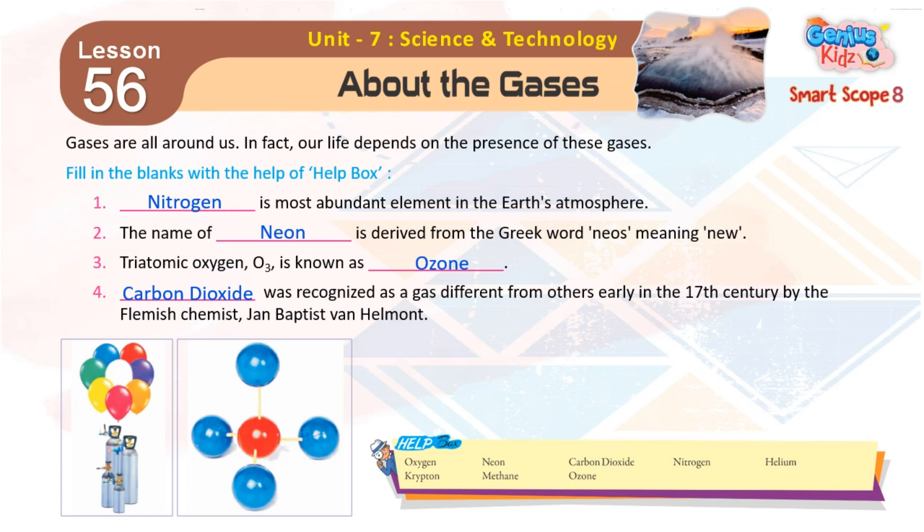1. Nitrogen is the most abundant element in the Earth's atmosphere. 2. The name of neon is derived from the Greek word 'nios' meaning 'new'.